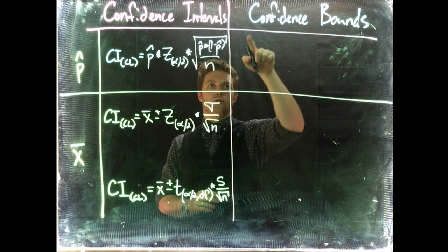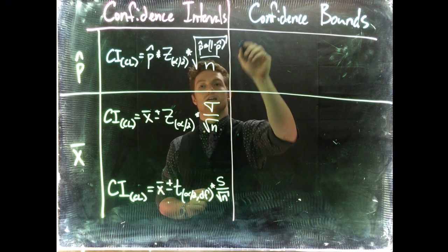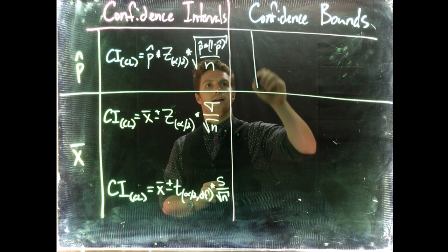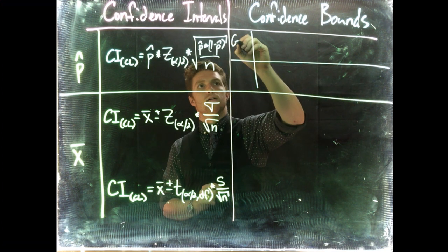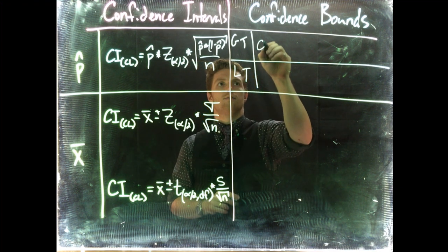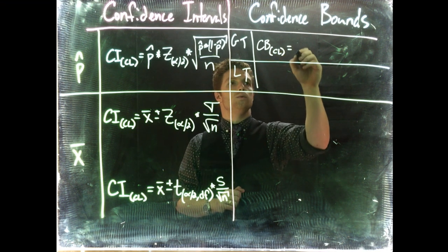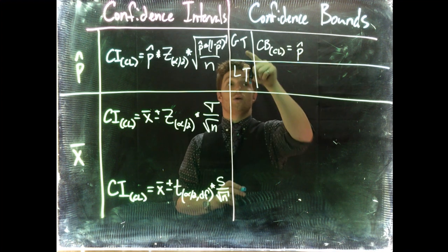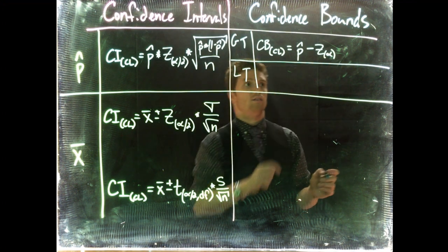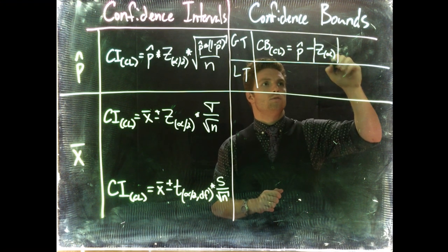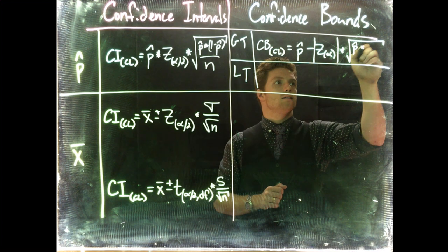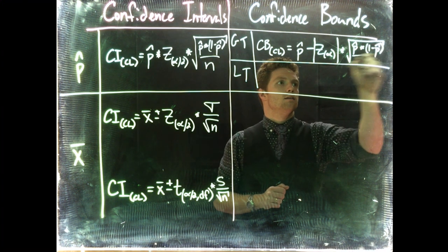We'll do one for greater than and one for less than. So if we want to say that we're 90% confident that we're greater than some value, the confidence bound at a specific confidence level is equal to p-hat minus the absolute value of z(α) multiplied by the square root of p-hat times 1 minus p-hat divided by n.